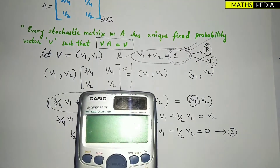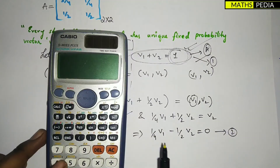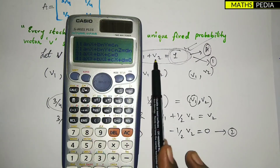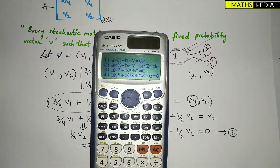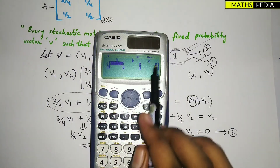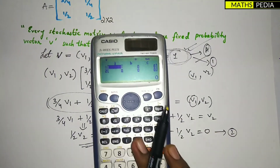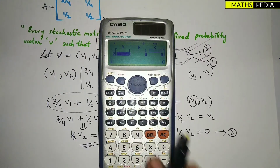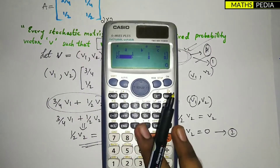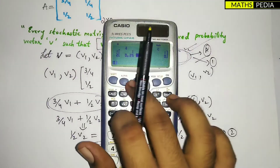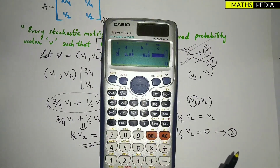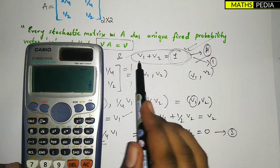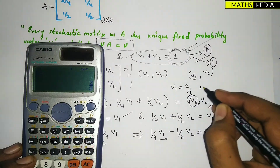I will solve using a calculator. Go to mode, then equation, and choose the first option since we have two variables V1 and V2. Enter the coefficients: for the first equation, A=1, B=1, constant=1; for the second equation, A=1/4, B=−1/2, constant=0.